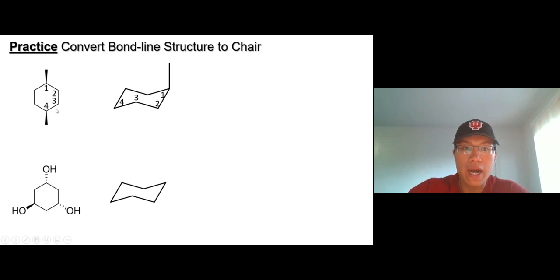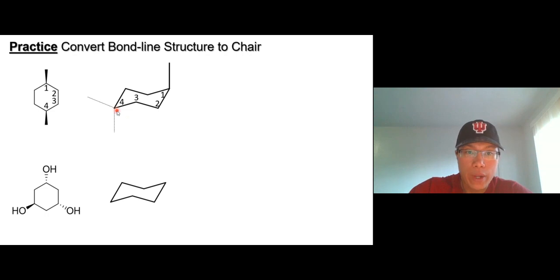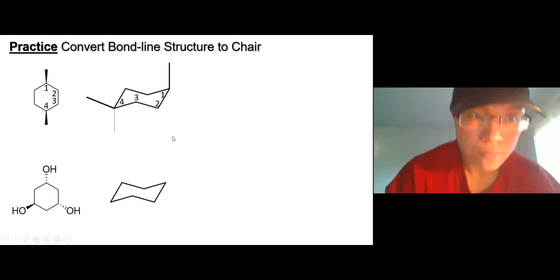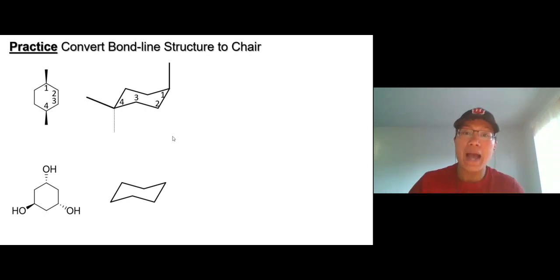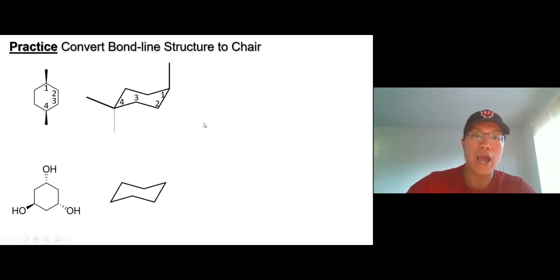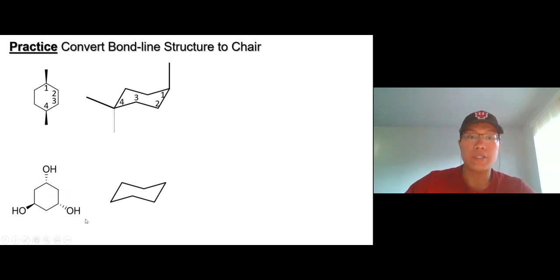Pointing up doesn't always mean axial — look at carbon number four. On carbon four, equatorial is up and axial is down. Looking at the bond-line structure, the methyl group is pointing up, so it's equatorial, not axial. It depends on the position. At position two, axial is down; position three, axial is up; position four, axial is down. So be careful — just look at the bond-line structure: if it goes up, keep it up; if it goes down, keep it down.